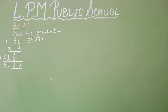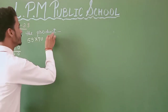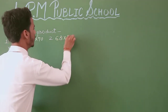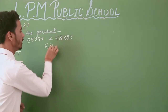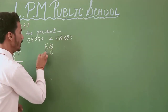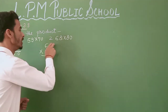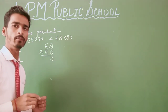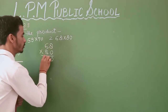The next question is 68 × 80. Let's see how we can solve it. Firstly, we have to multiply by 1s: 0 × 8 = 0 ones. Because when 0 is multiplied by a number, the product remains 0. And 0 × 6 is also 0.